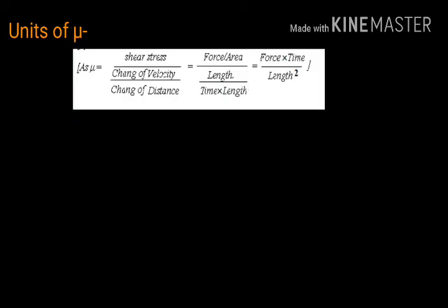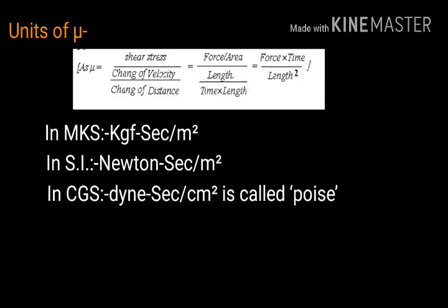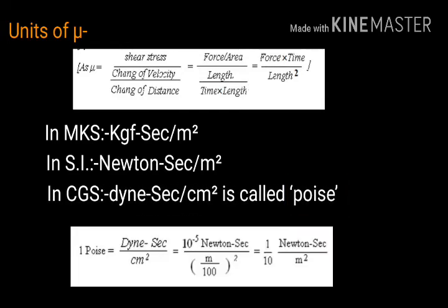Where μ is called coefficient of dynamic viscosity and du/dy is called rate of shear strain or velocity gradient. The unit of μ in MKS is kgf second per meter square, in SI is newton second per meter square, in CGS is dyne second per centimeter square which is called poise. 1 poise equals to 1/10 newton second per meter square.